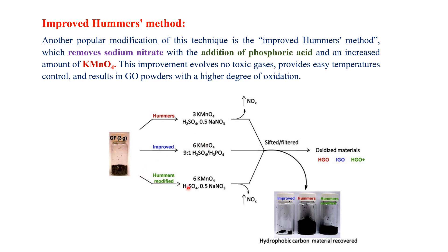The modified Hummer method uses 6 molar potassium permanganate in the presence of sulfuric acid and sodium nitrate — similar to the Hummer method but with increased potassium permanganate. The products are denoted as HGO (Hummer graphite oxide) from the Hummer method, IGO (improved graphene oxide) from the improved method, and the modified Hummer graphene oxide from the modified Hummer method.